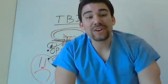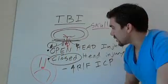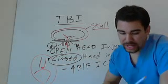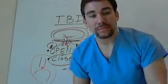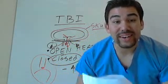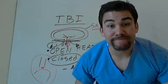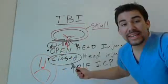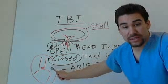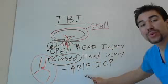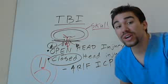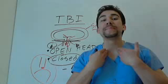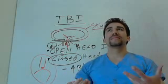Continuing on in our traumatic brain injury, we have open versus closed head injuries. Open head injuries have the highest risk for infection. Closed head injuries are the worst because they have increased risk for intracranial pressure as well as spinal cord pressure.